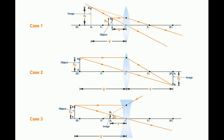Now let us try to understand the sign convention by looking at these three cases. Observe carefully. In all the three cases, U is the object distance. It is measured from the lens — that is, from the optical center O, or we can also call it P.